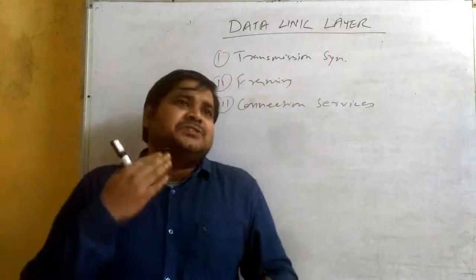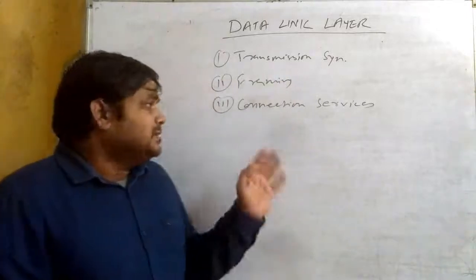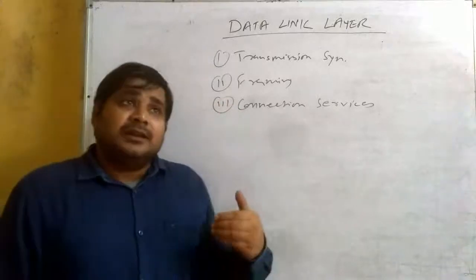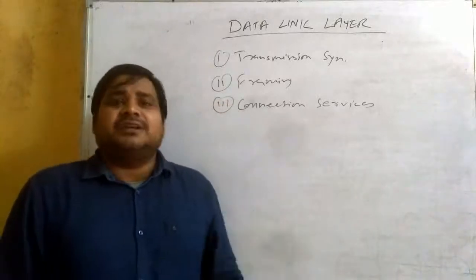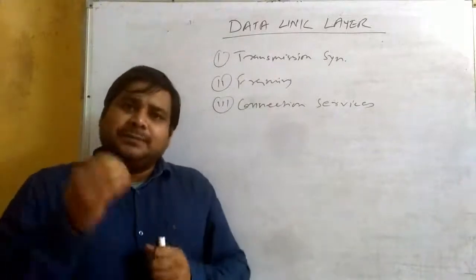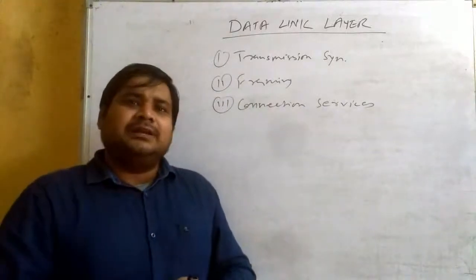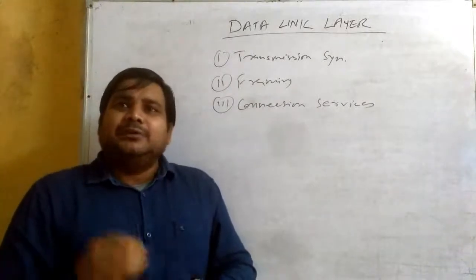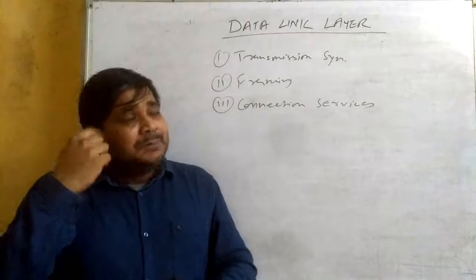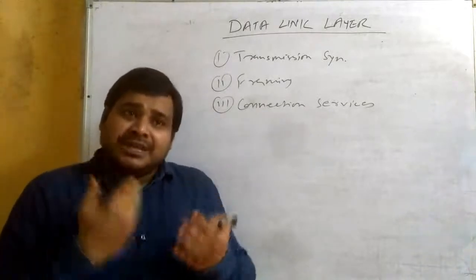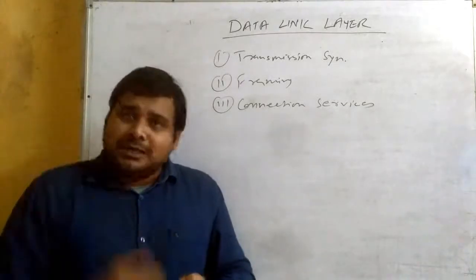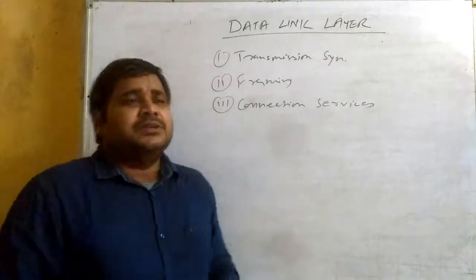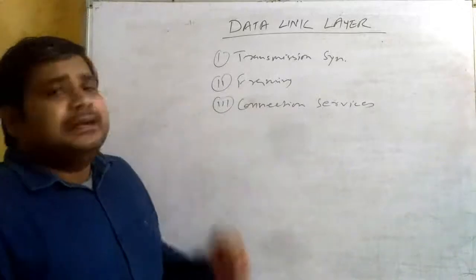The second type of service is Connectionless Acknowledged Services — no path is made, but we will get acknowledgement that the data has been delivered, meaning it is guaranteed that data is delivered. The third type is Connection Oriented Acknowledged Services, where both acknowledgement and a defined path are made. These are the kinds of services provided by the data link layer.